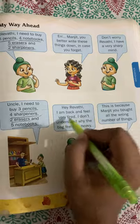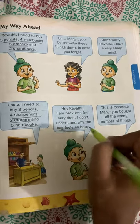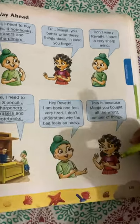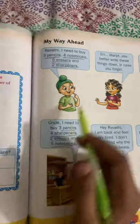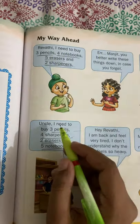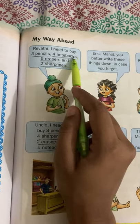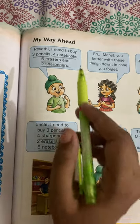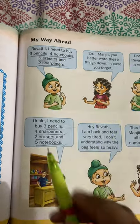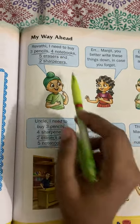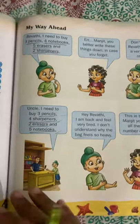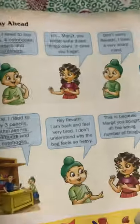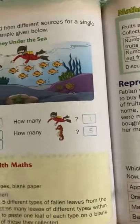Revati, I am back and feel very tired. I don't understand why the bag feels so heavy. Revati said: This is because Manjit, you bought all the wrong number of items. He needed three pencils — he bought three pencils. He needed four notebooks — but he bought five notebooks. He needed five erasers — but he bought only two. He needed two sharpeners — but he bought four. He bought all the wrong items. That is the reason his bag is very heavy.